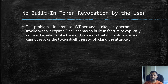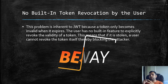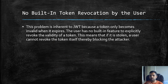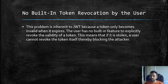The user has no built-in feature to explicitly revoke the validity of the token, meaning if it is stolen, a user cannot block the attacker. One approach is a token blacklist, but imagine millions of users — the blacklist database keeps growing, and there are many other issues with that approach.